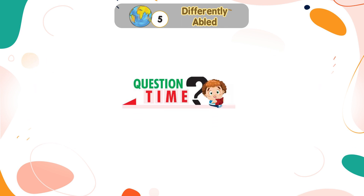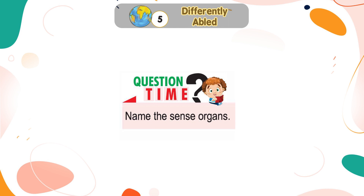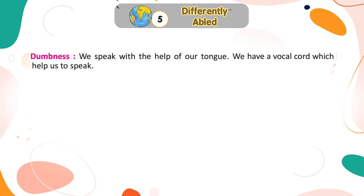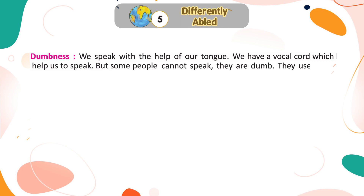Question Time: Name the sense organs. Dumbness. We speak with the help of our tongue. We have a vocal cord which helps us to speak. But some people cannot speak — they are dumb. They use sign language to communicate their messages.